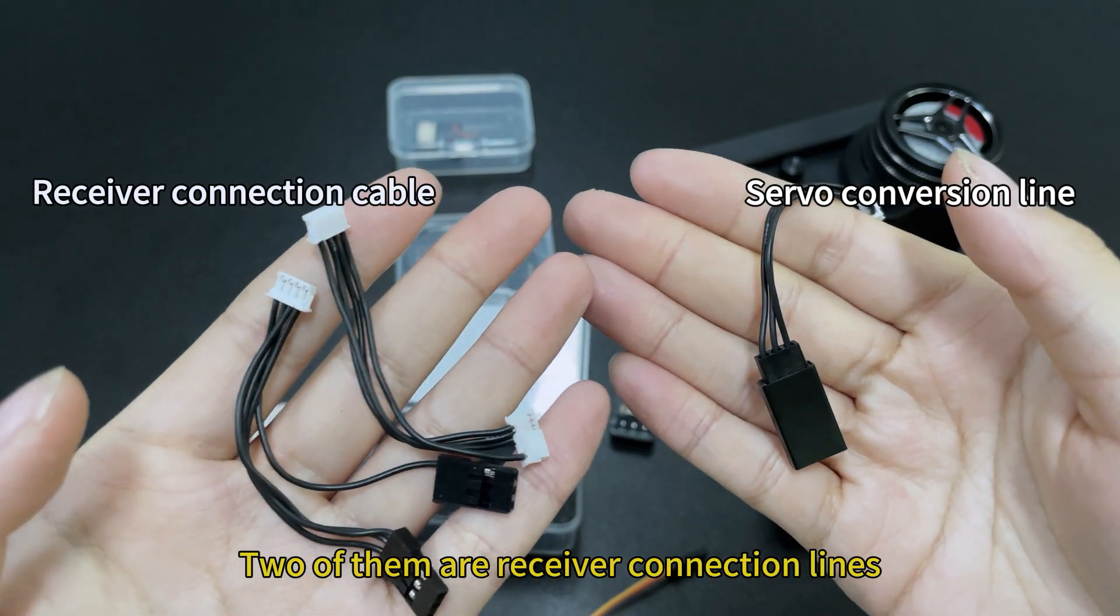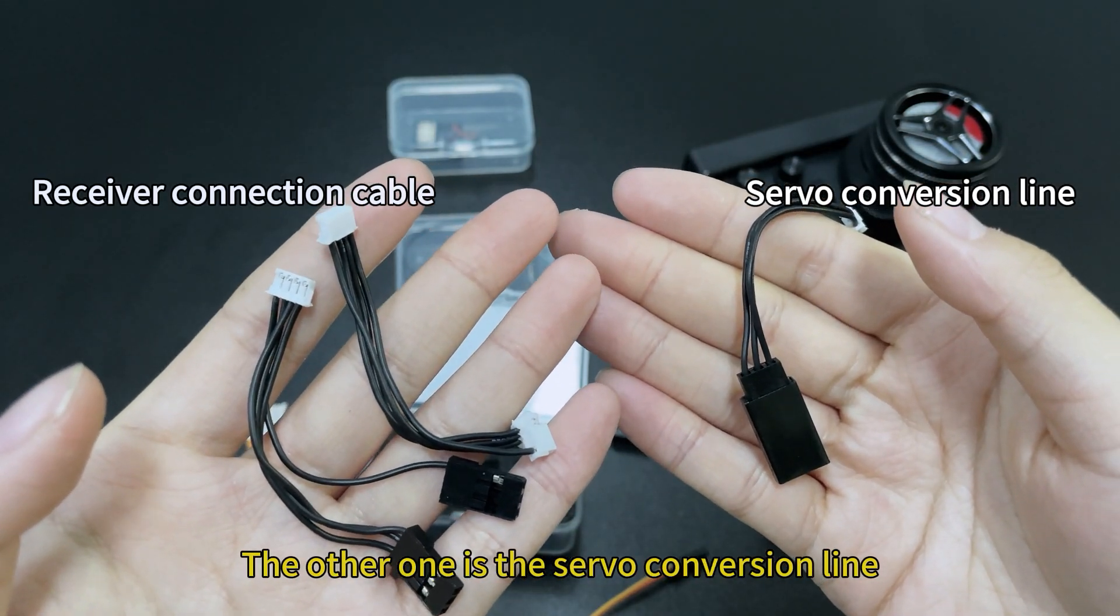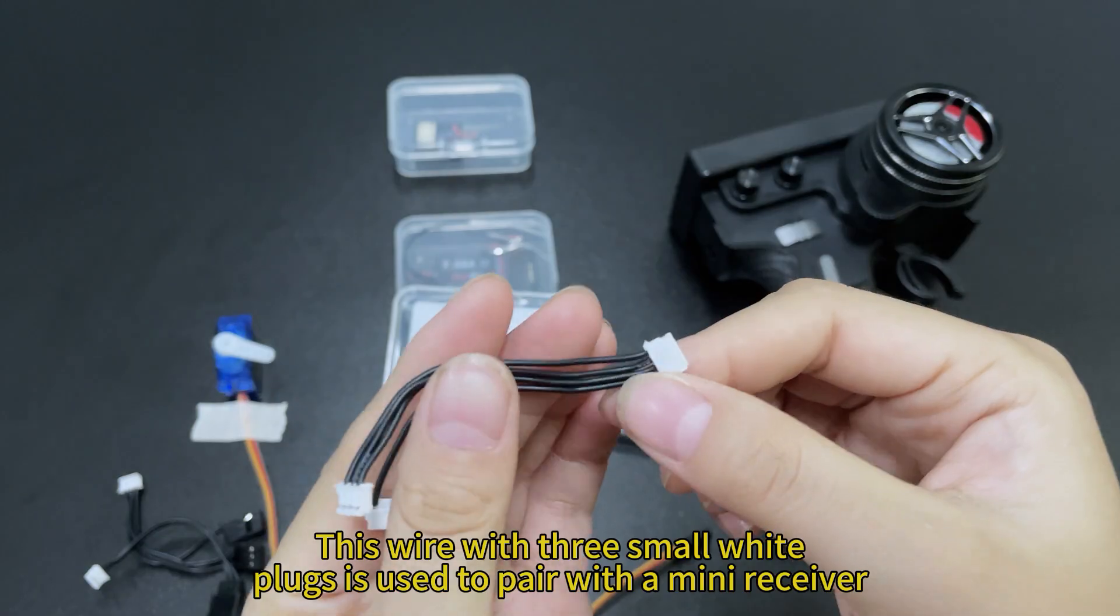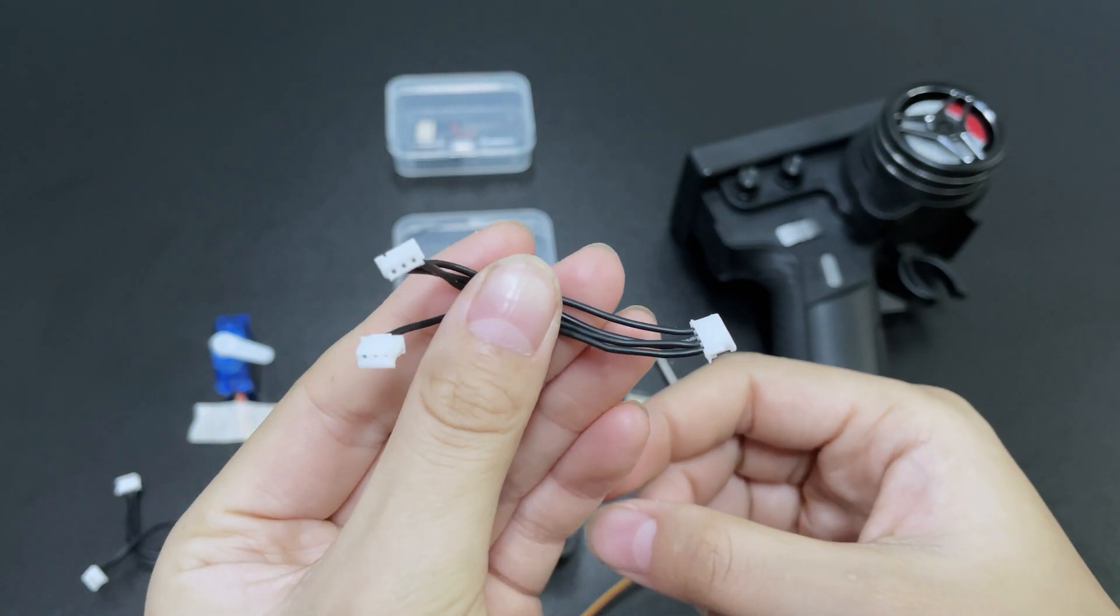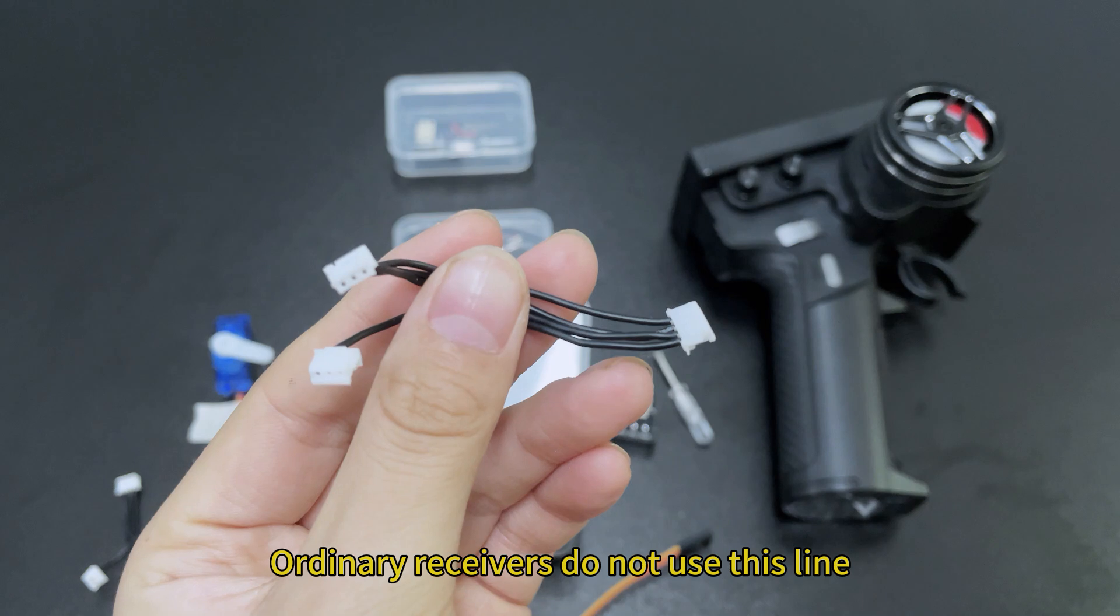Two of them are receiver connection lines. The other one is the servo conversion line. This wire with three small white plugs is used to pair with a mini receiver. Ordinary receivers do not use this line.